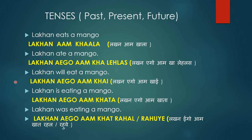Now for future tense: 'Lakhan will eat a mango' becomes 'Lakhan aego aam khai.' 'Khai' is a short form — like in Hindi we say 'Lakhan ek aam khayega.' For present continuous, 'Lakhan is eating a mango' becomes 'Lakhan aego aam khata' — similar to Hindi 'Lakhan aam khata hai.'